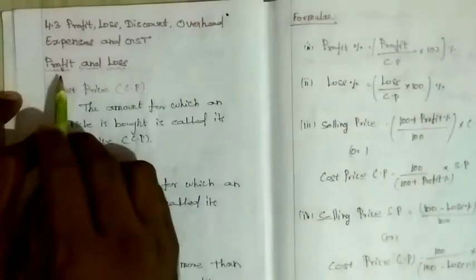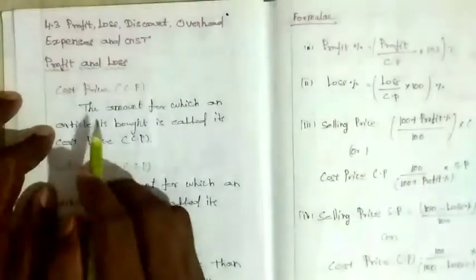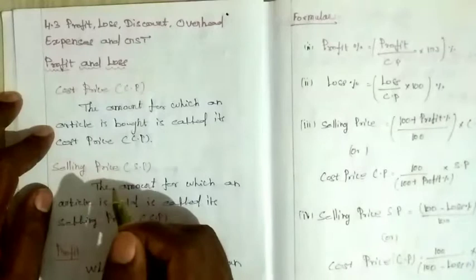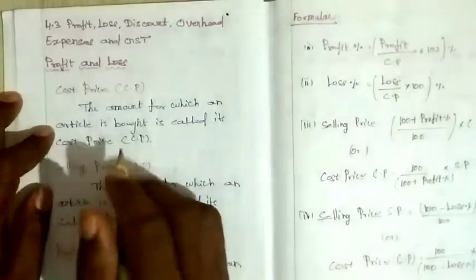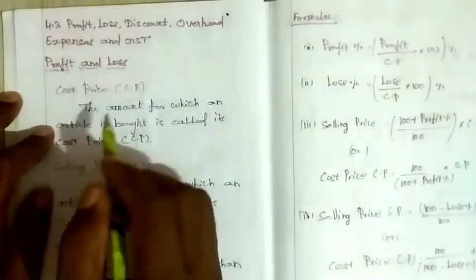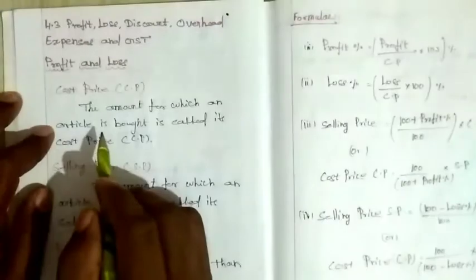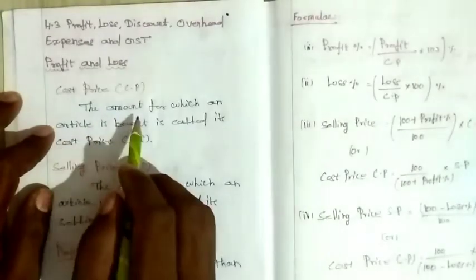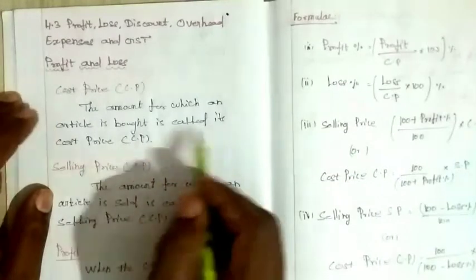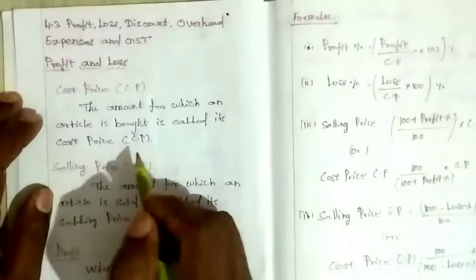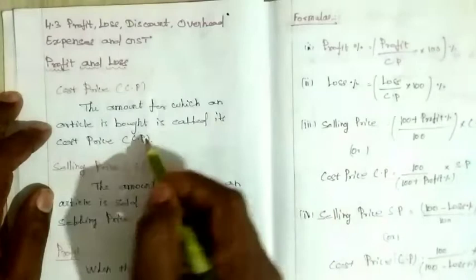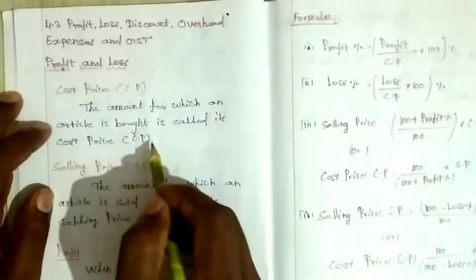First, profit and loss. The cost price: the amount for which an article is bought is called its cost price. The amount of money paid to acquire an article is the cost price.